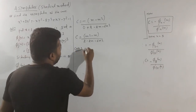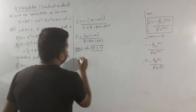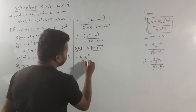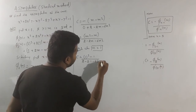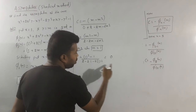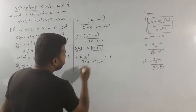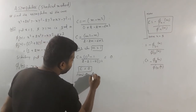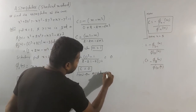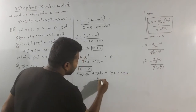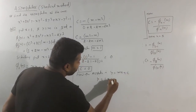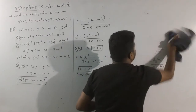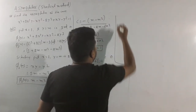Case 1: when m = 1. Substituting into c = (m² - m) / (2 - 2m - 6m²): numerator = 1 - 1 = 0, so c = 0. The asymptote is y = mx + c, so y = 1·x + 0, giving the first asymptote: y = x.